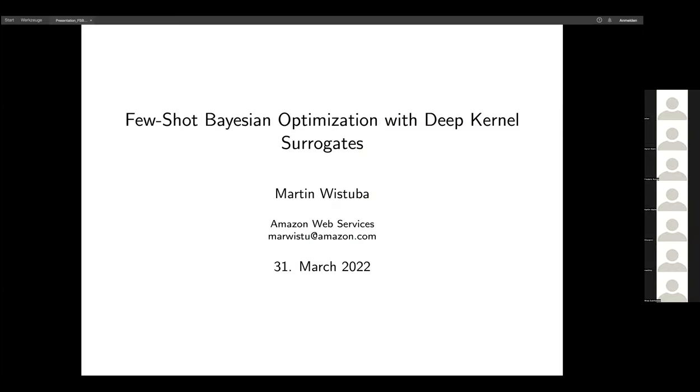Welcome everyone. Today we have Martin Wistova from Amazon Web Services in Berlin. Martin will present his work on few-shot Bayesian optimization with deep kernel surrogates. Martin did his PhD at the University of Vilsheim in Germany and has been in IBM Research in Dublin before he joined Amazon.